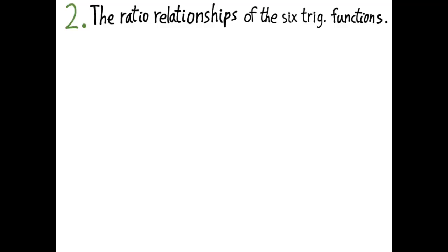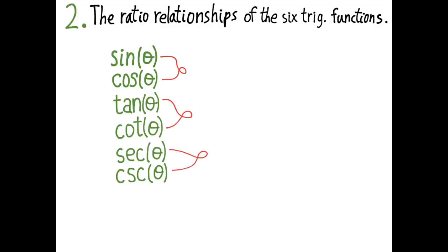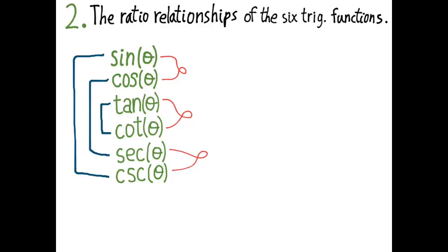Number two: the ratio relationships of the six trigonometric functions. The unit circle defines the sine and cosine functions. Sine divided by cosine is the tangent, and you can define the other three trig functions in terms of the first three. Each function is paired with a co-function — the sine of an angle is the cosine of the complement of that angle — and the same is true of tangent/cotangent and secant/cosecant. Also remember the reciprocal pairs: sine theta is the reciprocal of cosecant theta, and so on.